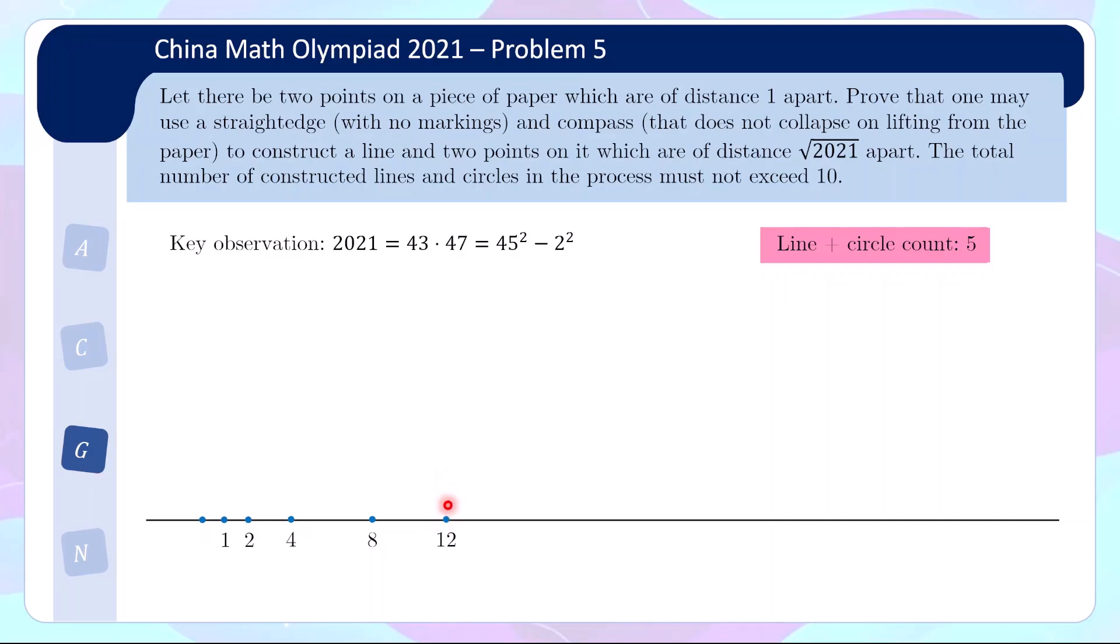Now I double that again, center at 12, radius 12. Draw my circle with my compass, I get 24. And now maybe I can get very close to 45 but actually the closest I'll do here is getting to 46. So center at 24, I'll use radius 22 which can be obtained by 2 to 24. So I draw the circle with radius 22 and I'll get a point of distance 46 away from the starting point.